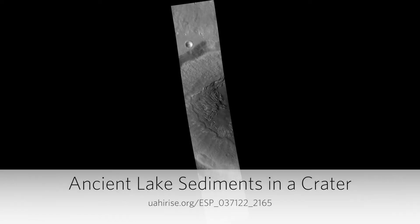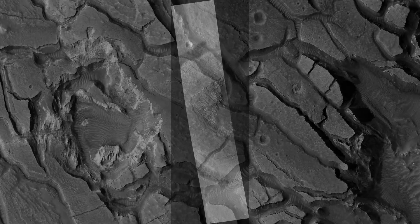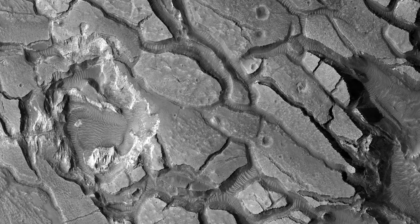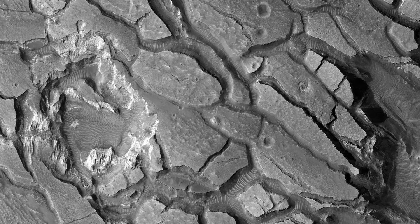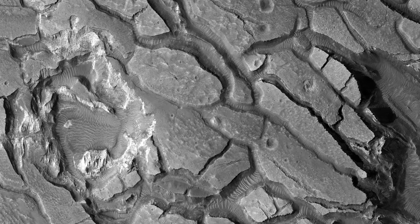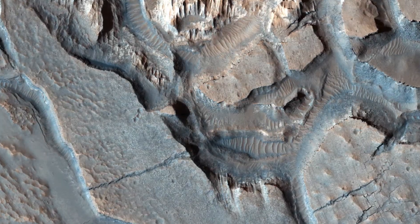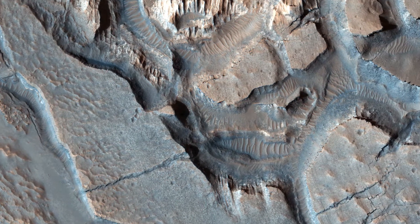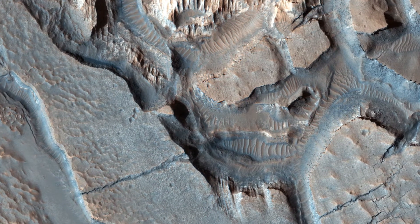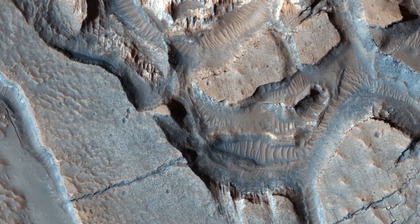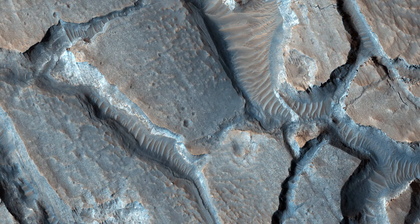Ancient lake sediments in a crater. This image shows some interesting fractured materials on the floor of an impact crater in Arabia Terra. There is a channel entering the crater and exiting the crater, as we've seen in a context camera image. This channel, along with an unusual deposit on the lowest part of the floor, suggests that there was once an ancient lake that deposited sediments here.